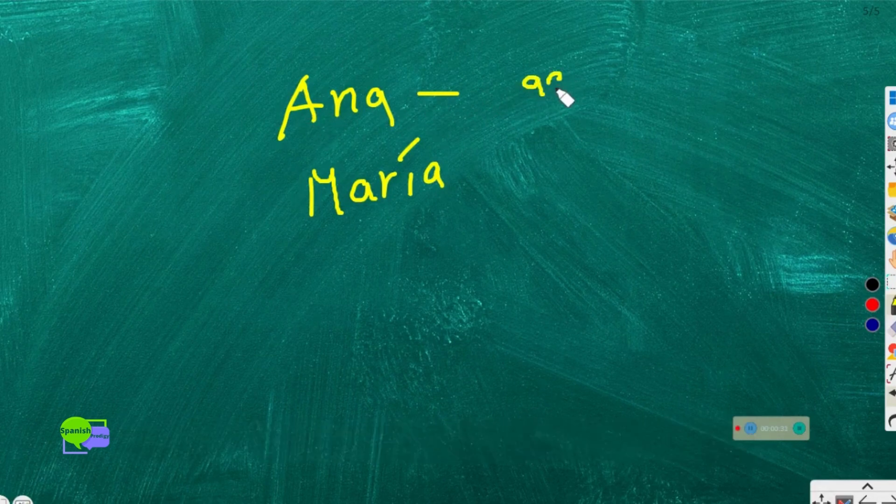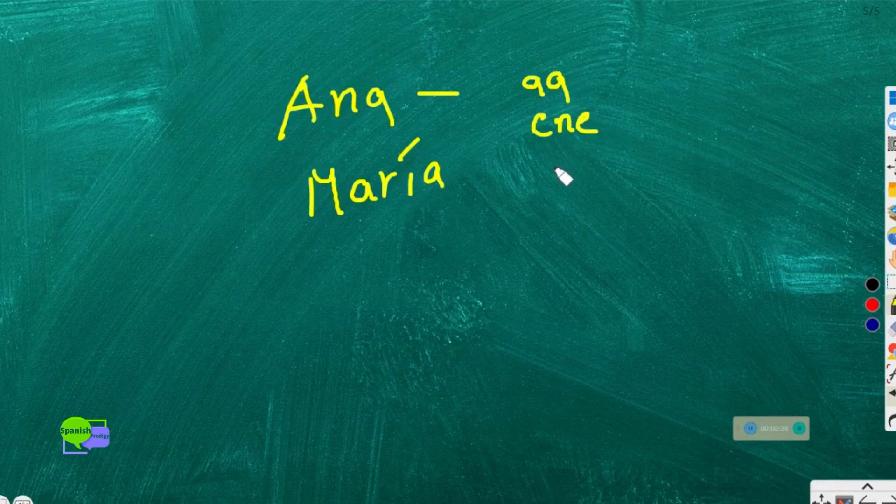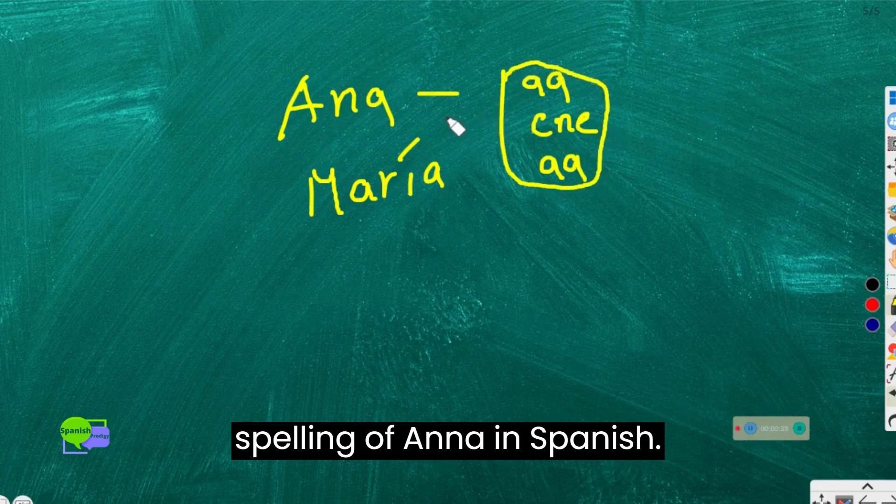You should say A, N, A. This makes the spelling of Ana in Spanish.